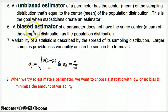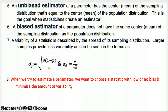A biased estimator, on the other hand, has a sampling distribution whose average is not the same as the true mean — meaning something went wrong with how we collected data, we didn't have a large enough sample size, or conditions weren't met. A biased estimator gives us a bad interpretation of what the true value is. Be familiar with those two terms, which is not unlike what we covered in Chapter 4.